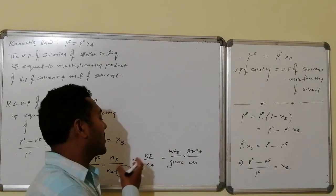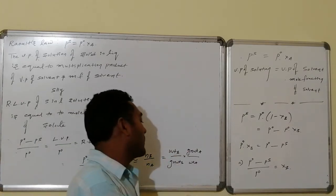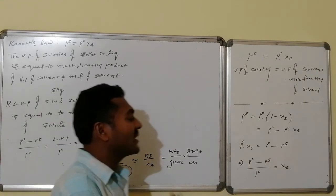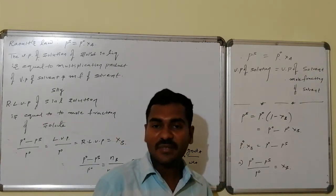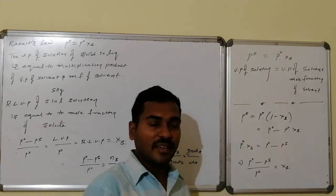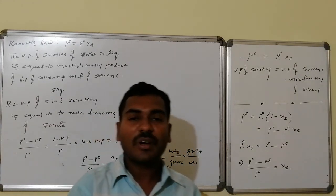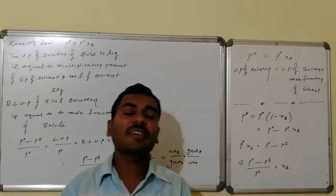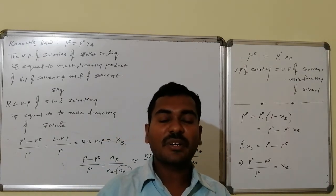These relations involving number of moles of solvent and solute, weight of solvent and solute, and gram molecular weights are used for various numerical calculations on vapor pressure and relative lowering in vapor pressure. Let us go for a problem to make this very clear.